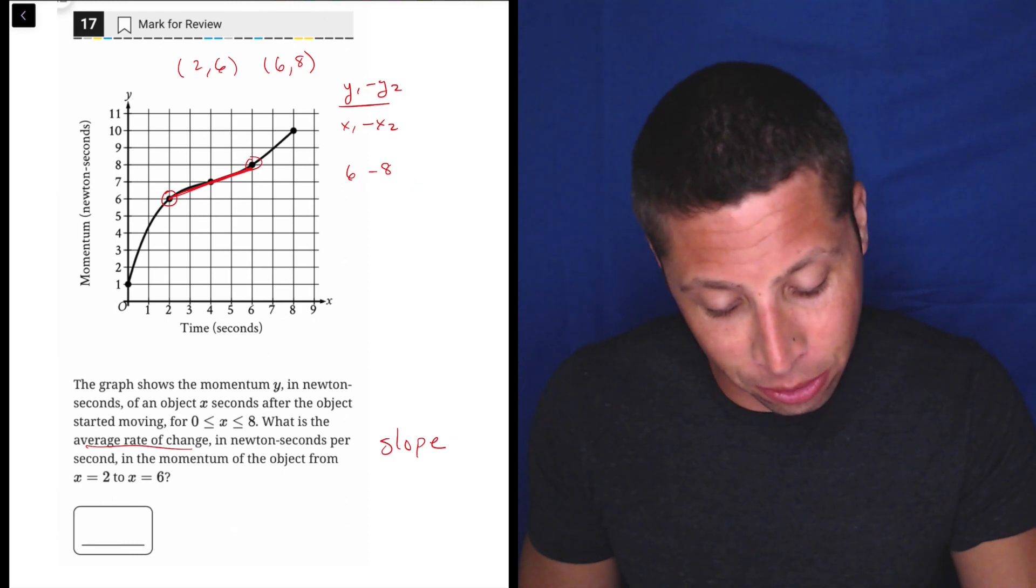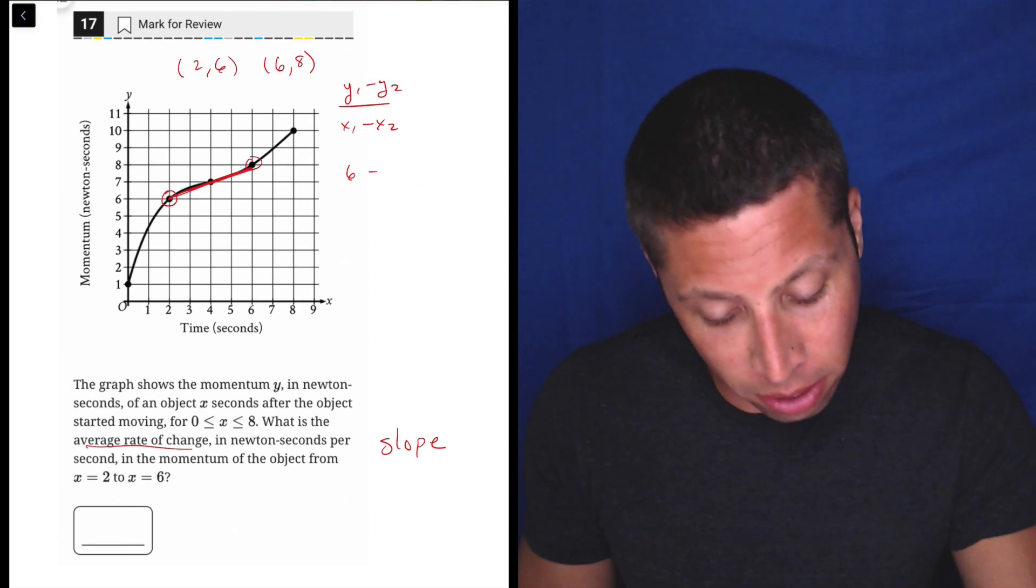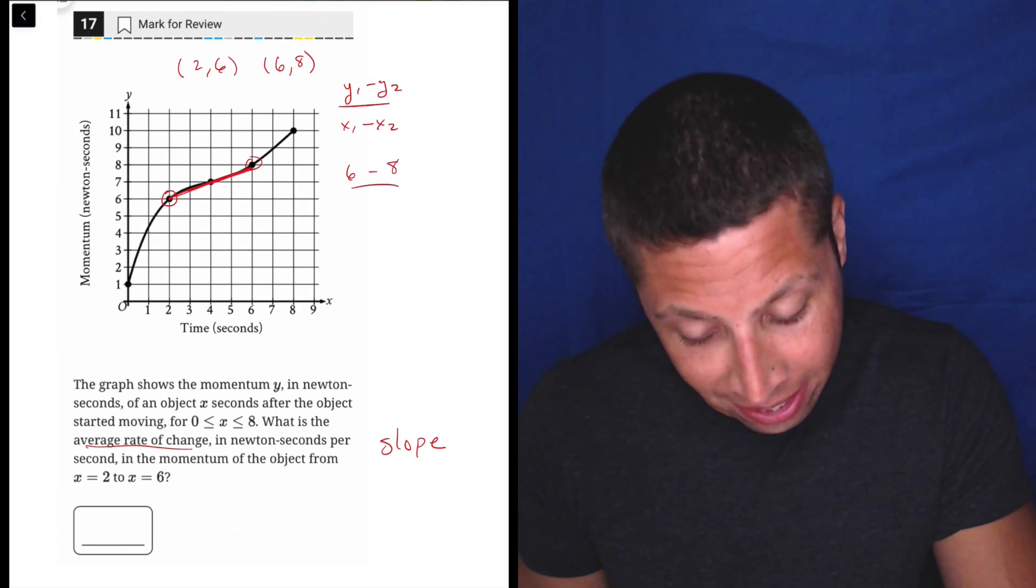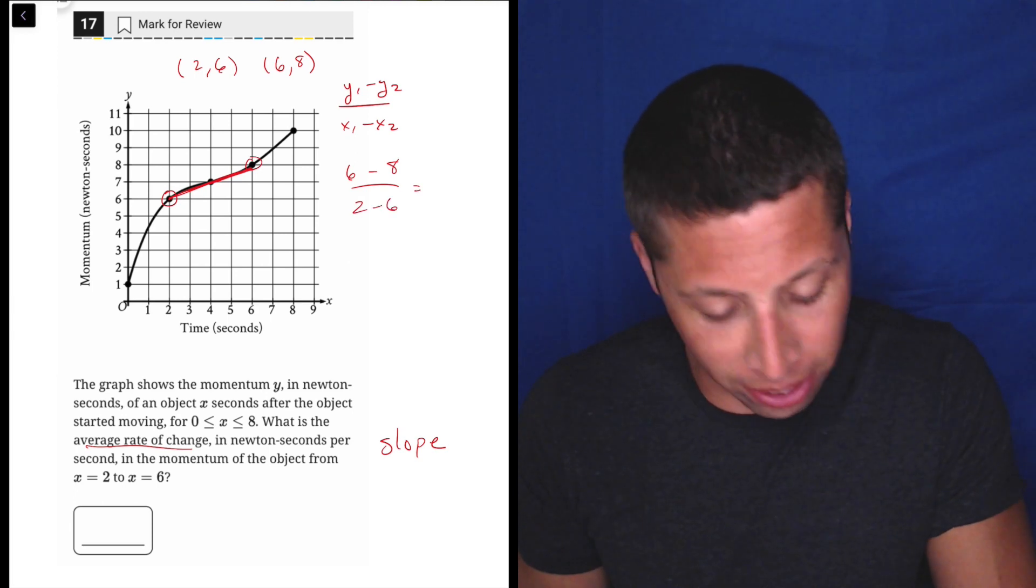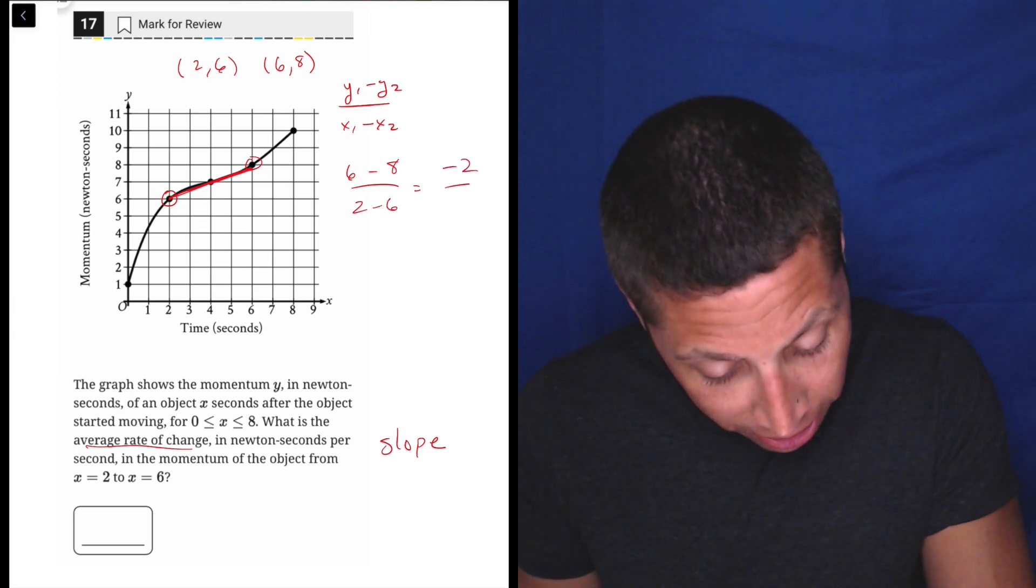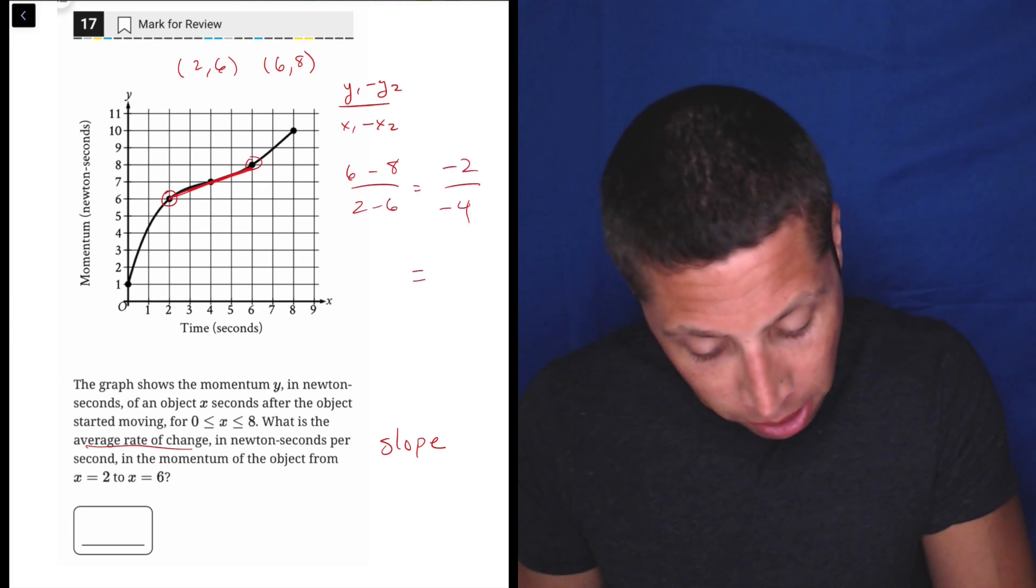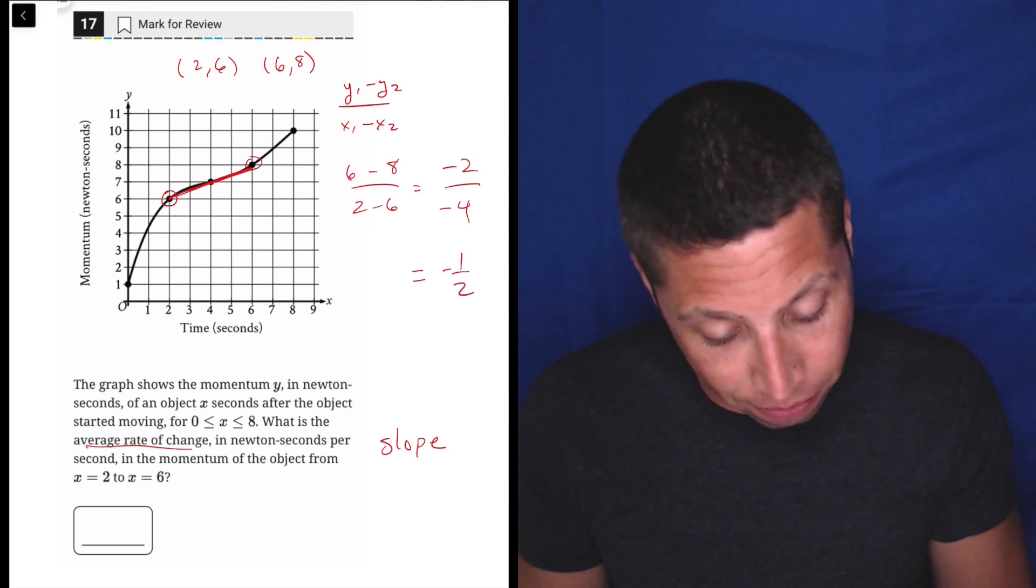Negative 6 - this is why I like scrap paper. As soon as I wrote that, oh no no, that was right. 6 minus 8 over 2 minus 6.